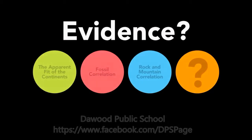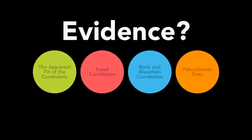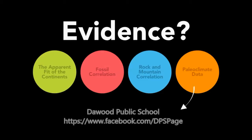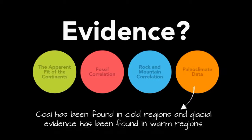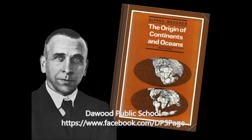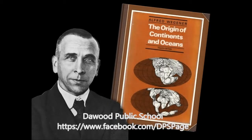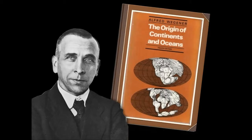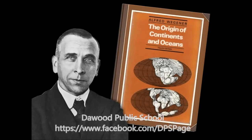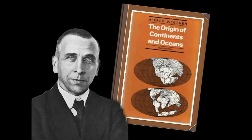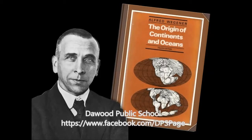That becomes evidence number four: paleoclimate data, or past climate data — the observation that coal has been found in cold areas and that glacial evidence has been found in warm areas. With these four pieces of evidence, Wegener published his book, 'The Origin of Continents and Oceans,' in which he laid out his case for continental drift, suggesting that all the continents were once connected in a supercontinent called Pangaea, which existed about 250 million years ago, and have since ripped apart into the present-day landmasses we know today.